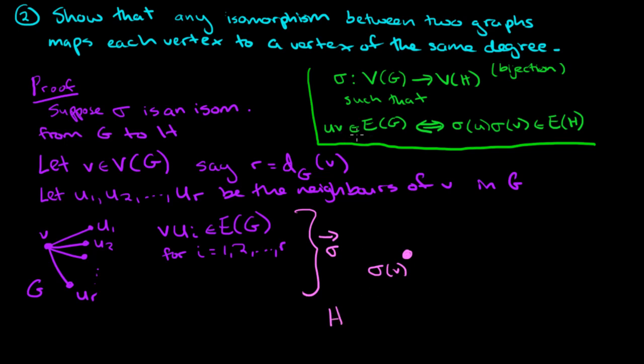And because this is an isomorphism, we know that there will be an edge sigma V, sigma U1. Because VU1 is an edge of G, so sigma V, sigma U1 is an edge of H. And that same thing holds for sigma U2, and you keep going until you get to sigma of UR. All of these are edges in the graph H.